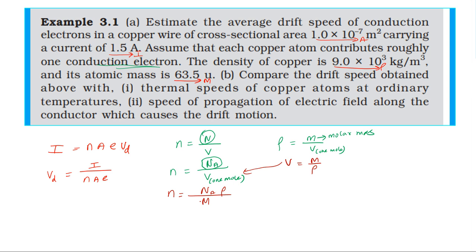Using Avogadro's number 6.02 × 10²³, density 9 × 10³, divided by molar mass 63.5 grams — that is 1 mole of copper atoms — we can calculate the free electron density n.